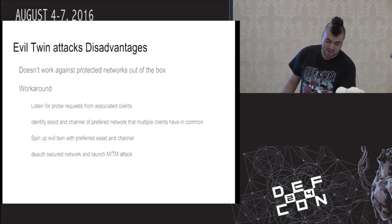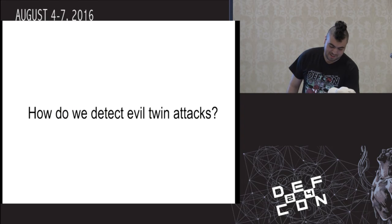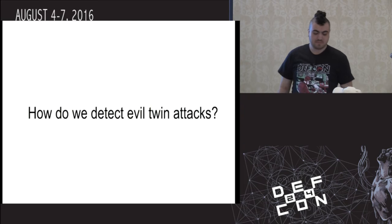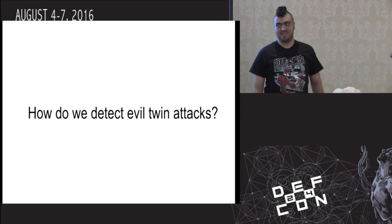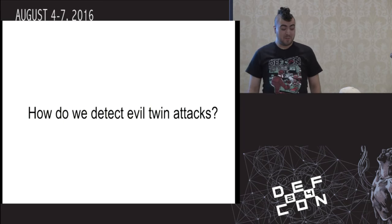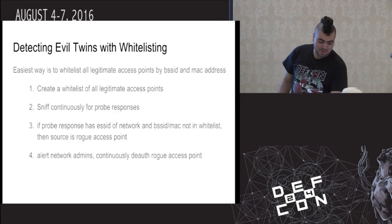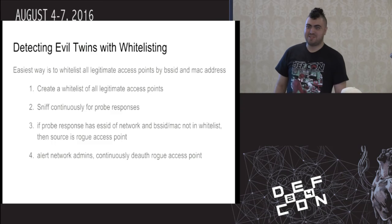But it's a little more complicated, which is kind of why it's not so great against protected networks. So how do we detect evil twin attacks? Well, one thing we can use is whitelisting. The standard way to do this is just to keep an inventory of what access points belong to your network.